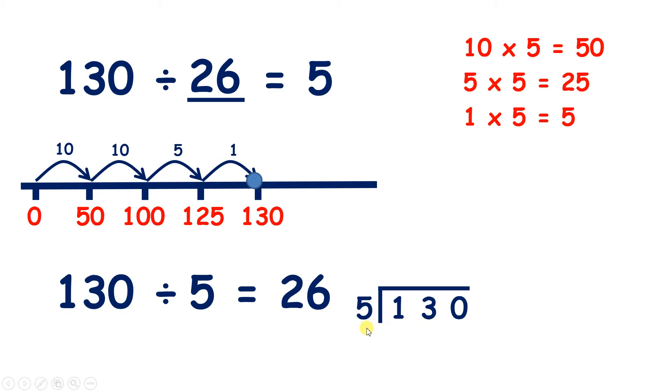13 divided by 5 is 2, remainder 3, and 30 divided by 5 is 6. So that gives us 26, which is our missing number.